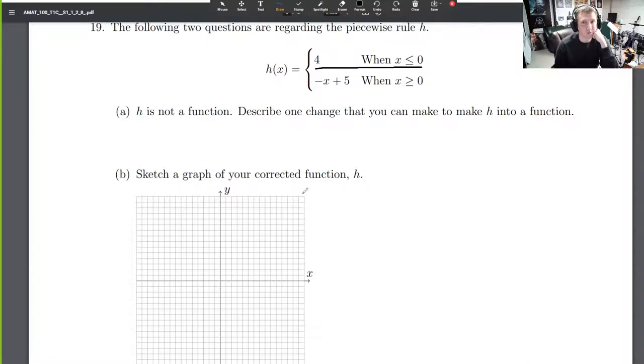Let me graph this already. When we plug in anything negative, that's this left-hand side. Here's zero, x equals zero. When we plug in anything less than or equal to zero, what do we get out? We get 4 out. So here we go: 1, 2, 3, 4. When we plug in zero, this first piece says we get 4. When we plug in anything less than zero, we also get 4 out. So this is just a horizontal line going to the left.